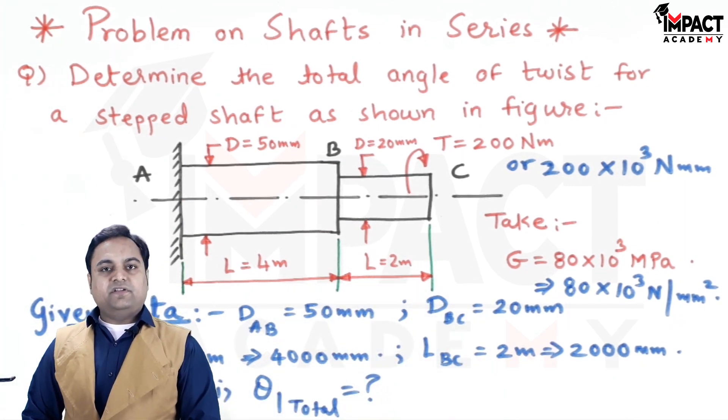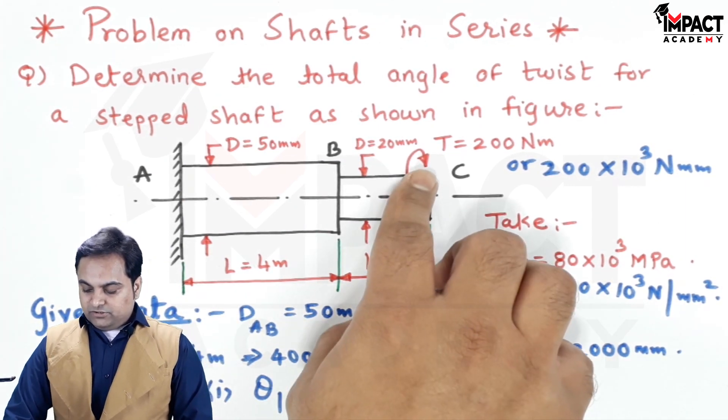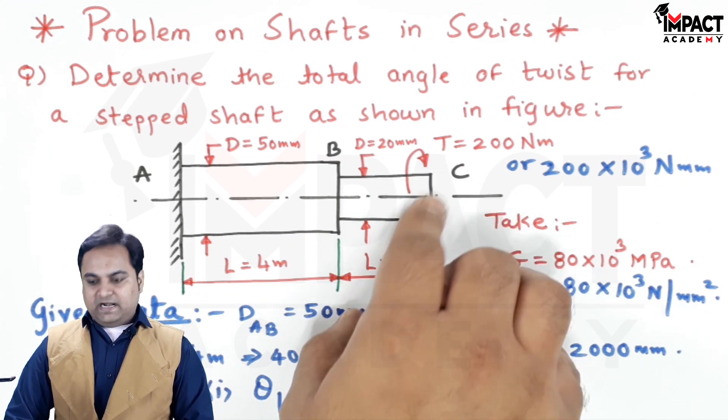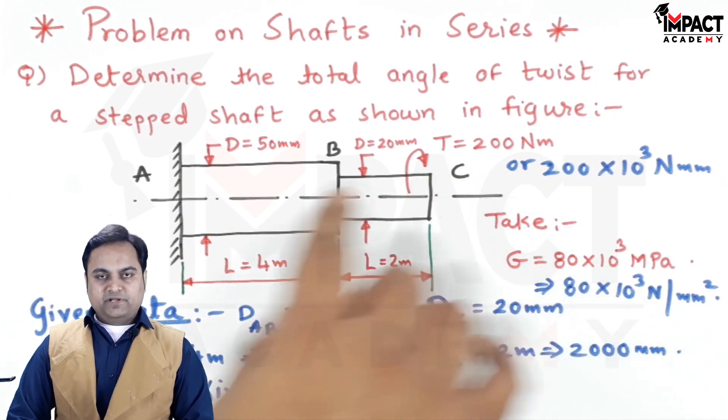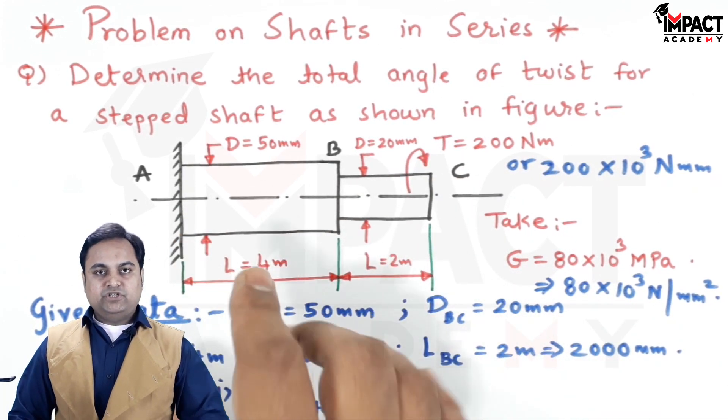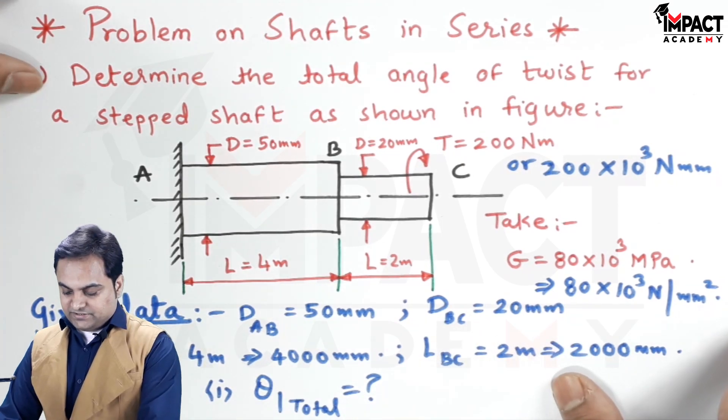For shafts in series, the condition is that the torque applied at point C will remain constant throughout. The torque value remains the same, whereas the angle of twist goes on adding.